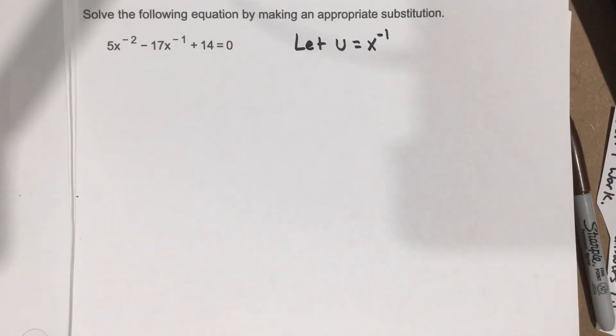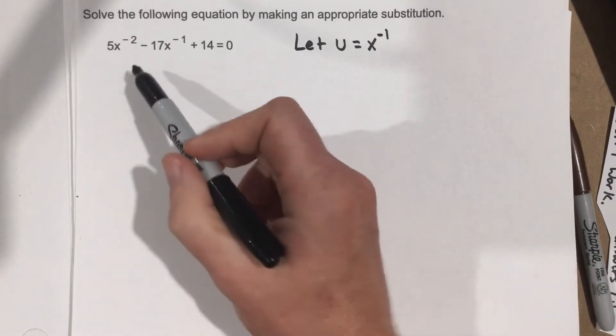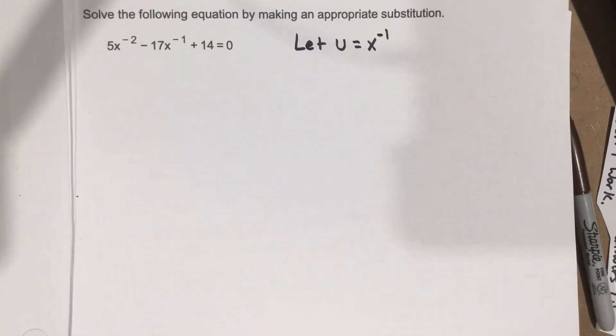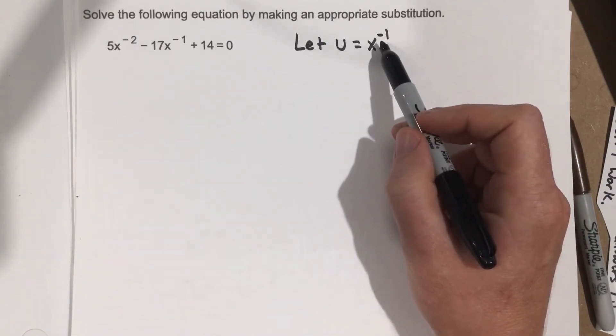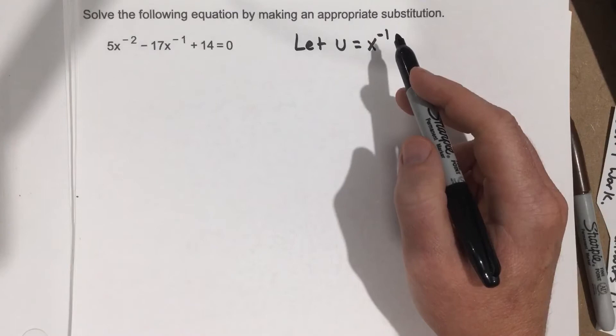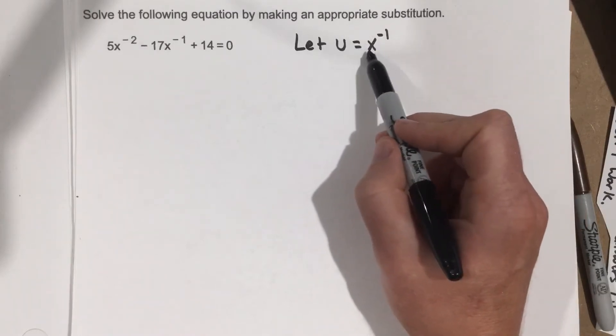So we're trying to change this equation into something we're used to so we can solve it and then substitute x to the negative 1 back in to find our final solution. So if we say let u equal x to the negative 1,